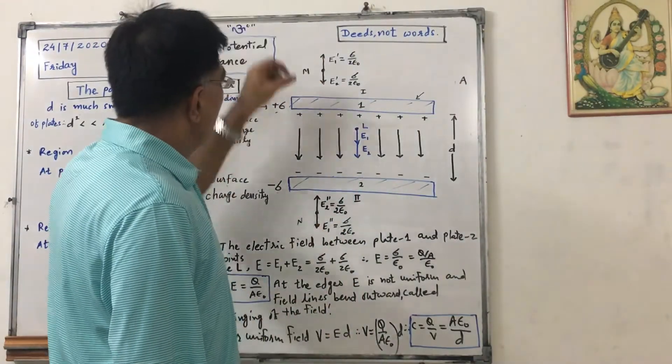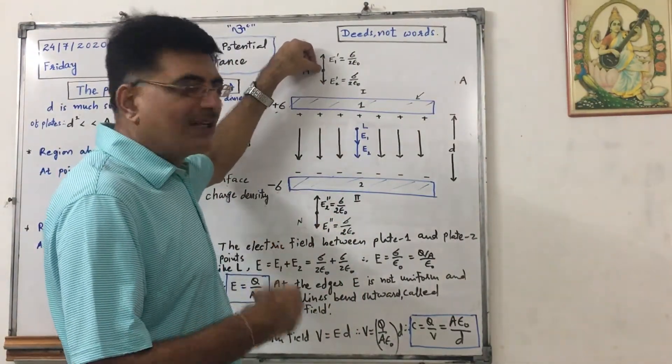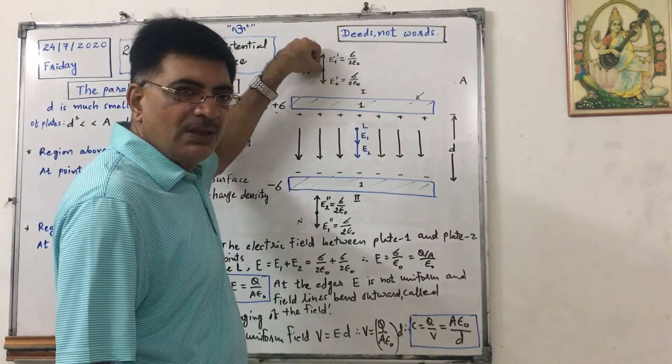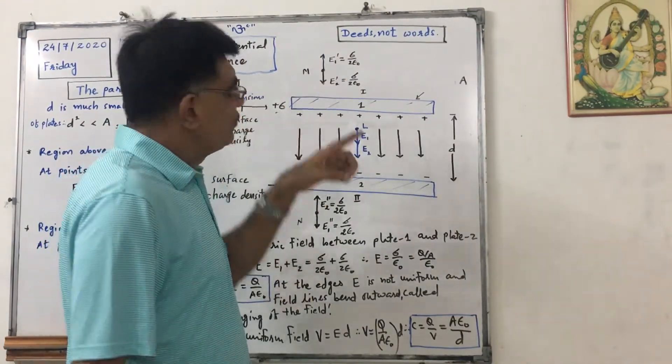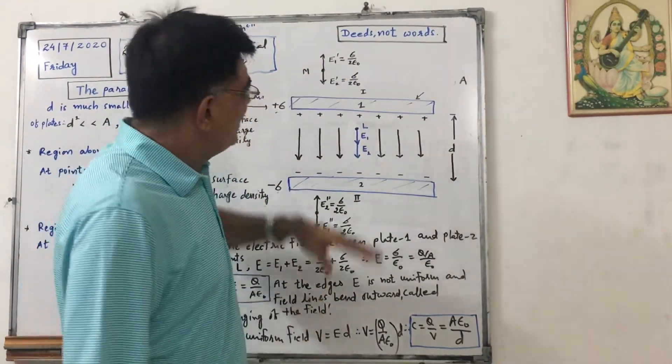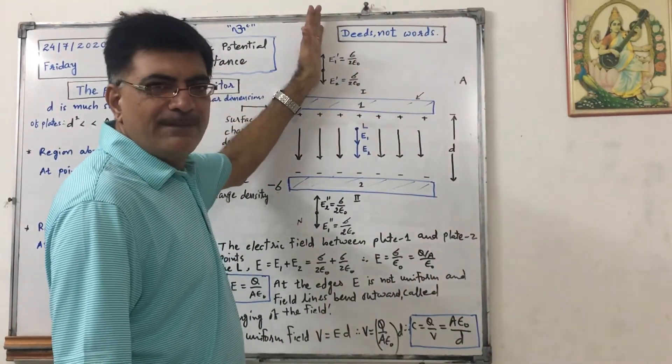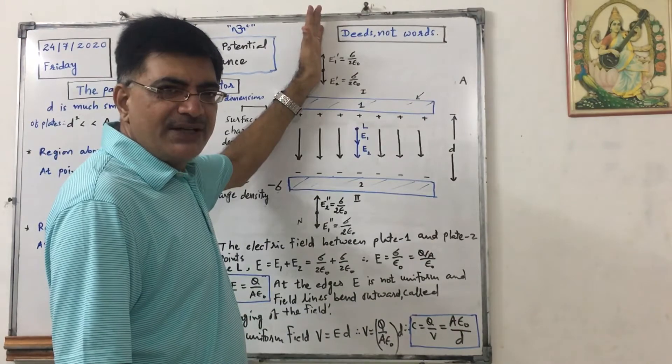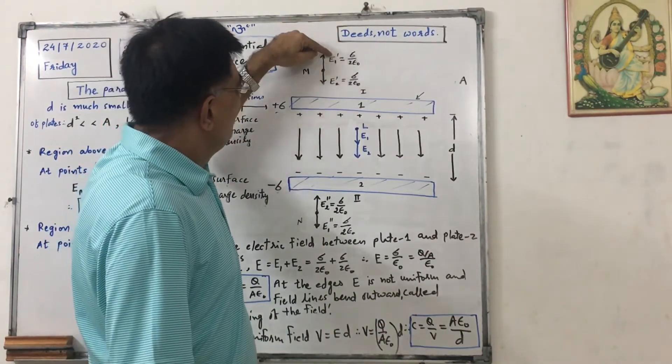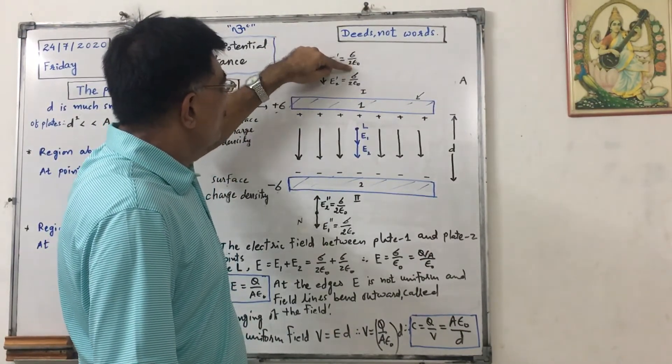And see, if I want to find electric field here at M, I have to consider uniform positive charge here. In that case, this positive plate will offer repulsive force and the field will be in this direction. So E1 dash is sigma upon two epsilon naught.